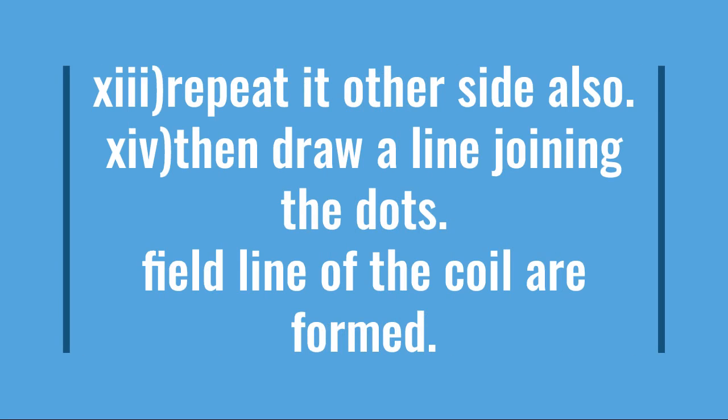After finishing both sides, draw a line joining all the dots. These lines show the coil form, the magnetic field lines.